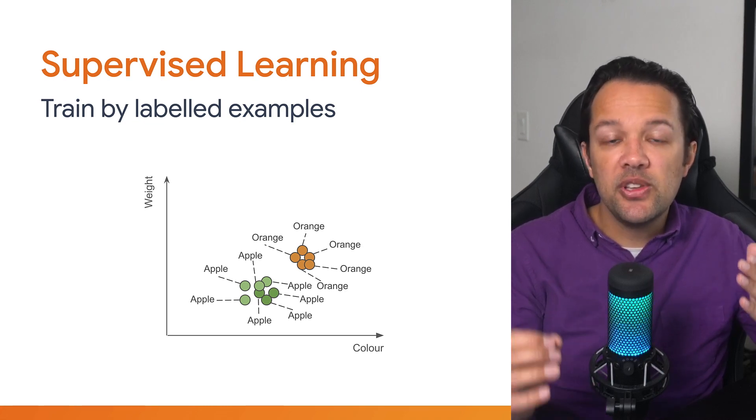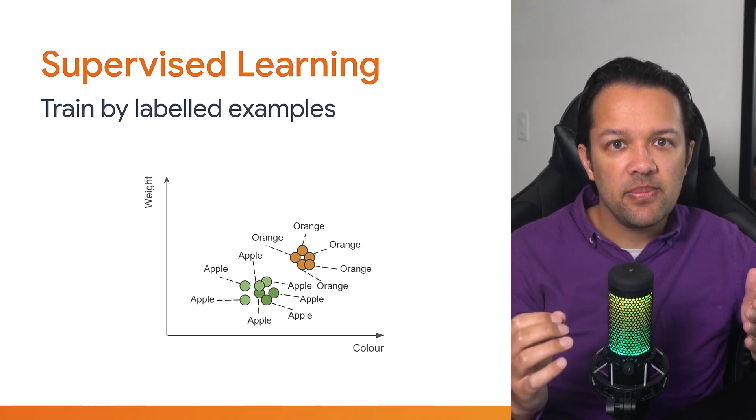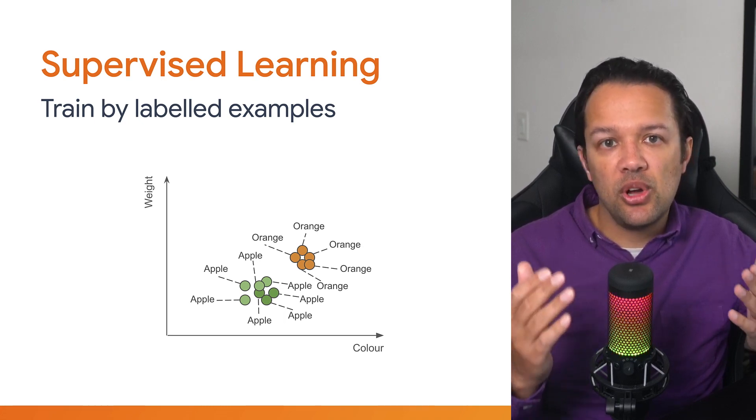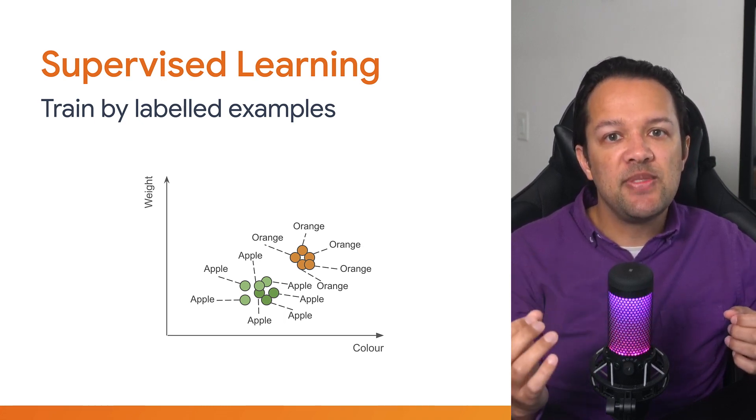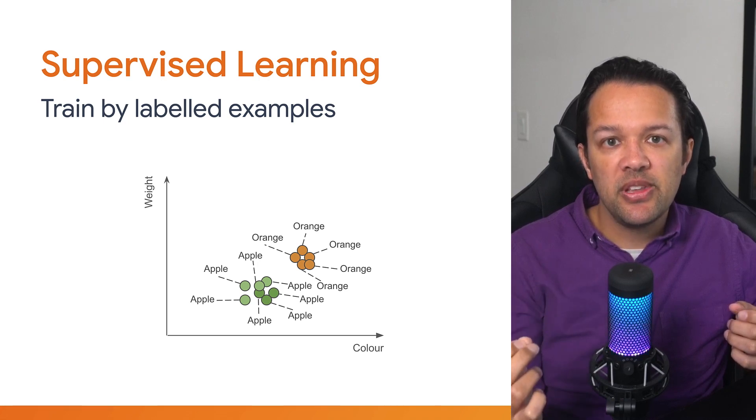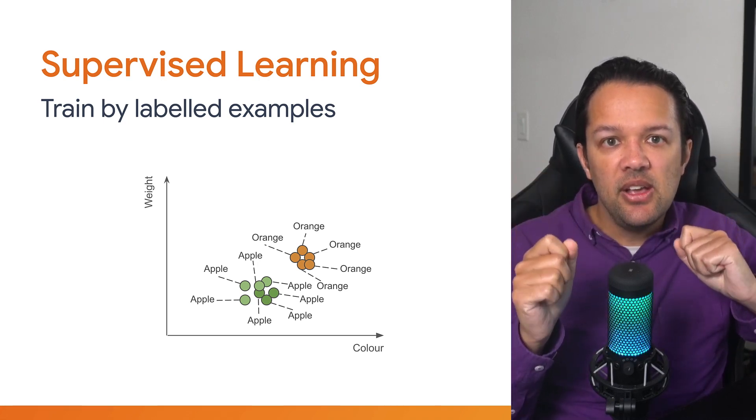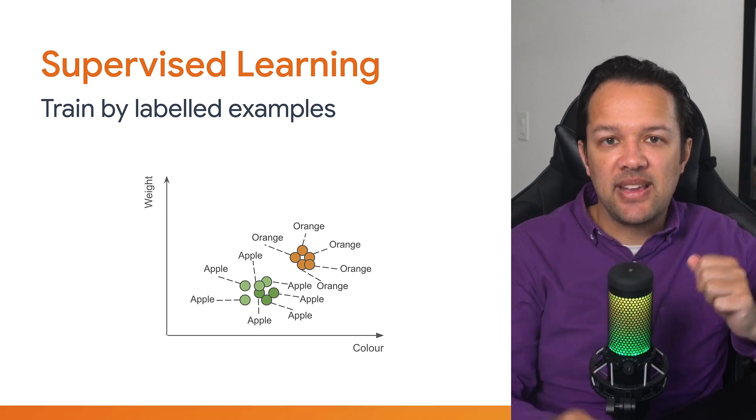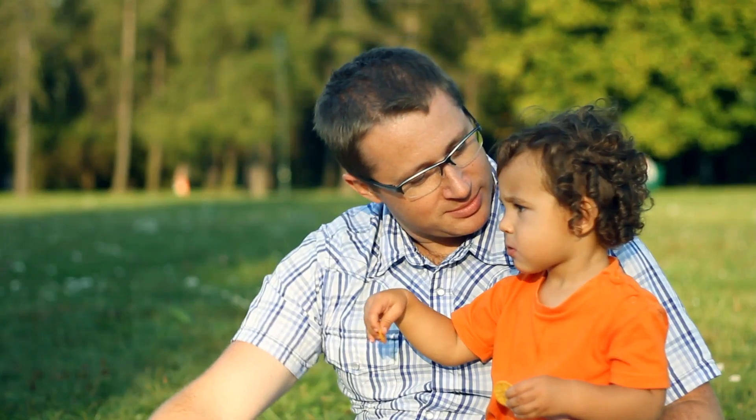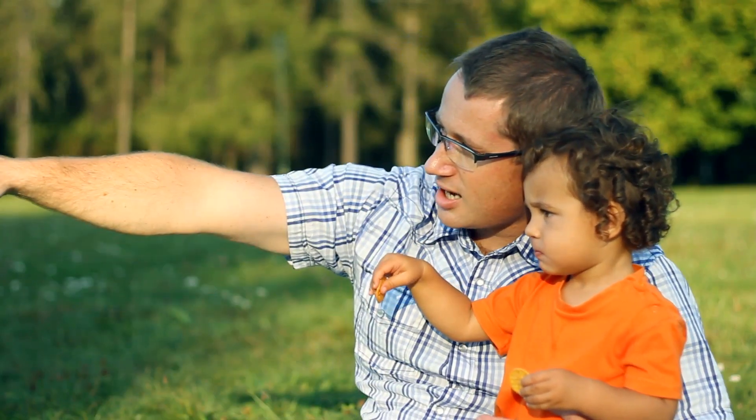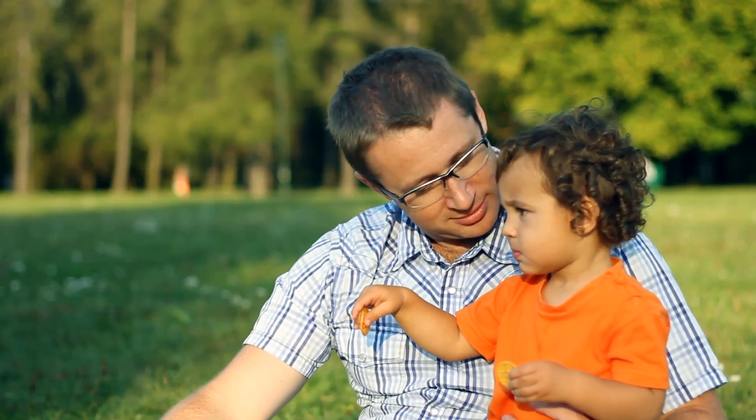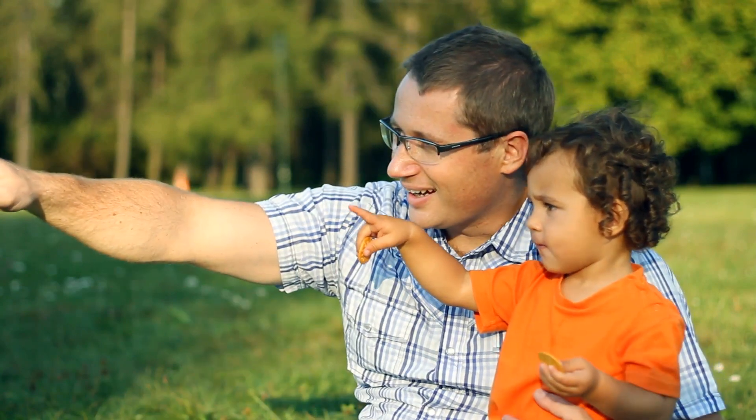This is important because when you train the machine learning system, at the start it'll be wrong a lot of the time, but it can realise this right away from our known labels and then change itself slightly to automatically be better next time around. And if you think about it, this is very similar to how human babies are taught. You show them an object and then tell them the name for it. And just like a human learning, you're probably needing to show a few examples before it will be able to distinguish between such objects correctly.